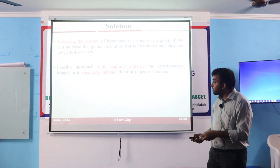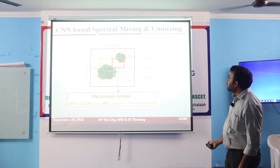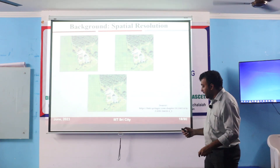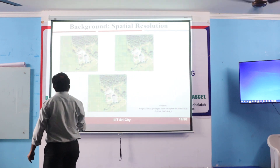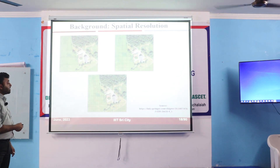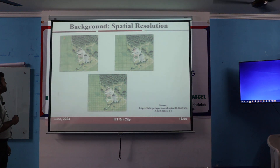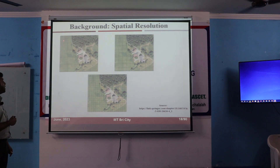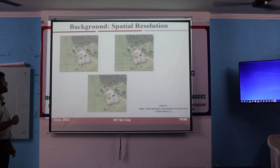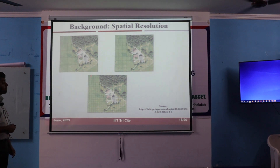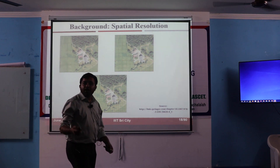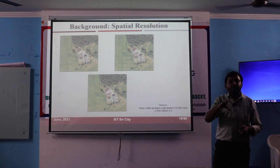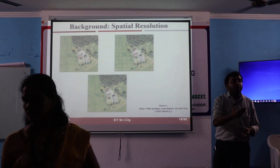Improving spatial resolution means you have to break those pixels into small sub-pixels. You can see here — this image was having a high, coarse spatial resolution. This image is having an improved spatial resolution. One pixel here is now broken down into many sub-pixels. Using machine learning or other techniques, you have to find out what are the values for all these individual pixels. This is the problem we want to solve — we need to take a high spectral resolution image and improve its spatial resolution.